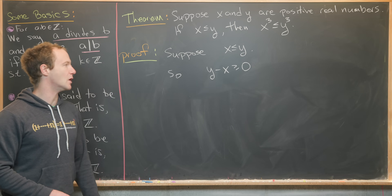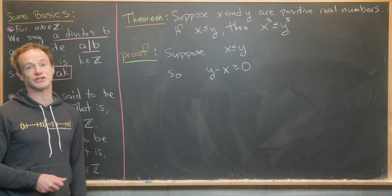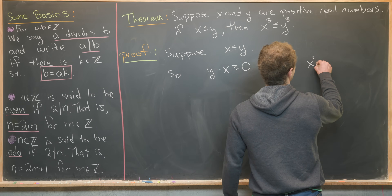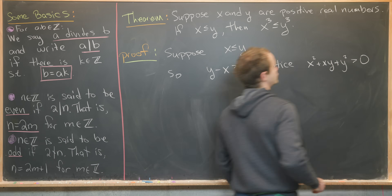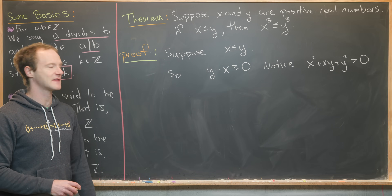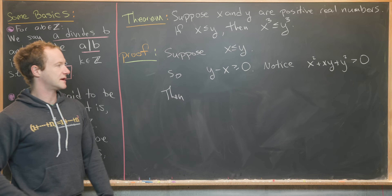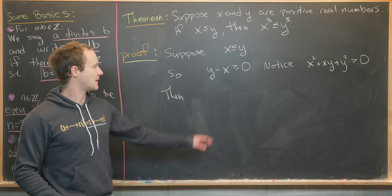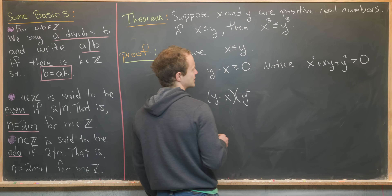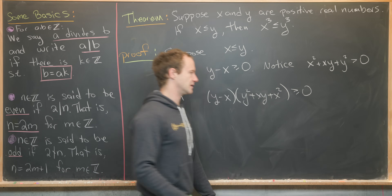Next, we'll multiply both sides of this inequality by something positive — it's important that it's positive so it does not change the direction of the inequality. Notice that x squared plus xy plus y squared is strictly greater than zero, because we're starting with positive real numbers. Multiplying both sides by this gives: (y minus x)(y squared plus xy plus x squared) is greater than or equal to zero.